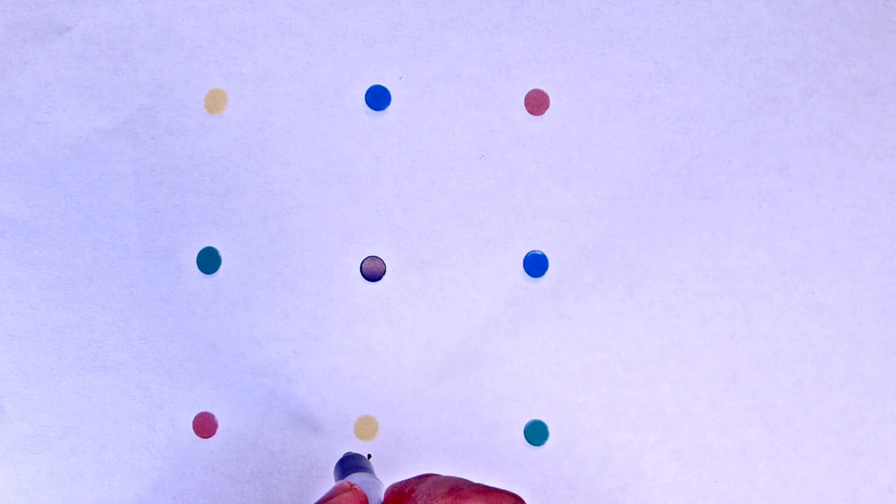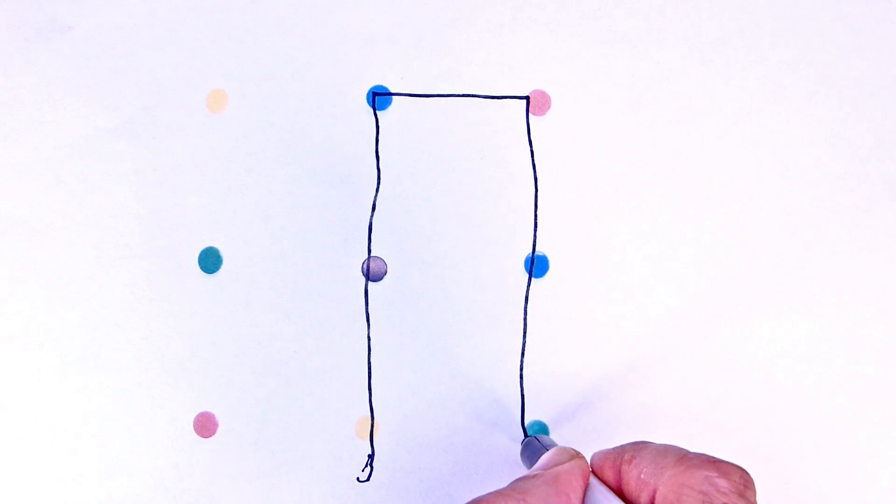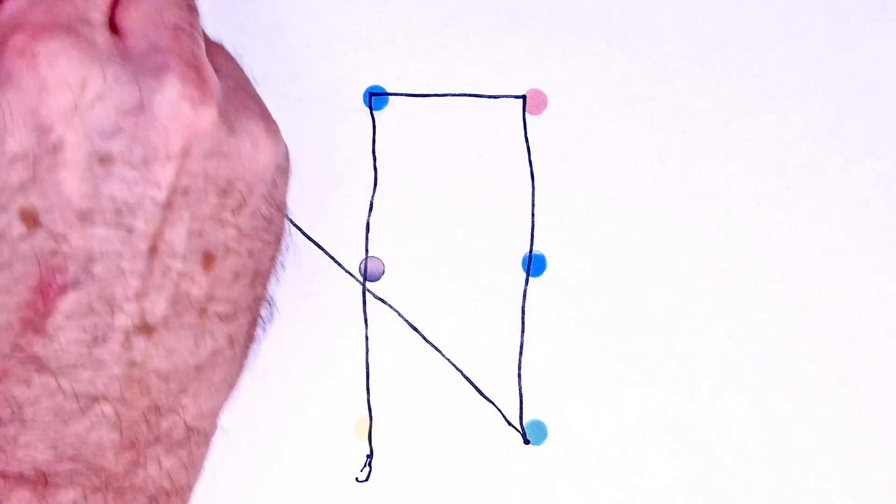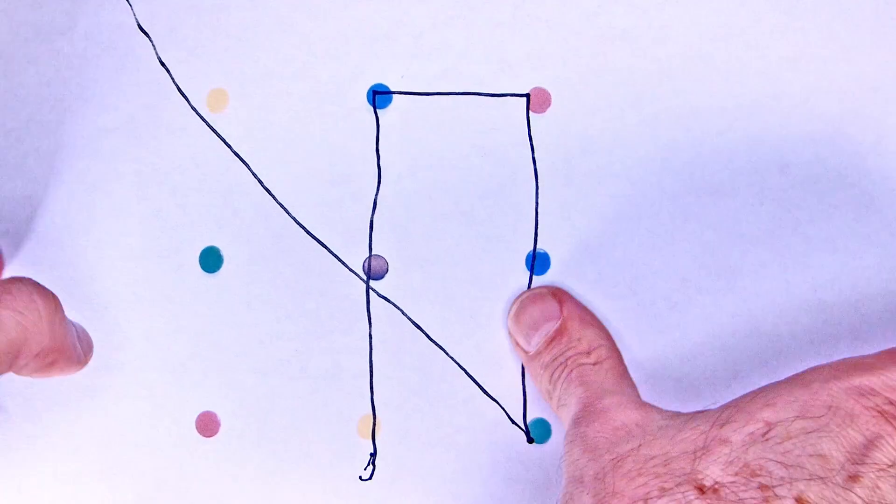With the Nine Dot Problem, we can start exploring through trial and error. Making four lines, can we run through all the dots? It's easy enough to draw four lines, but they don't run through all the dots.